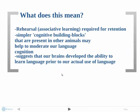Since rehearsal was necessary for the dogs, that may have confounded their retention rates — which were also said in an independent study to have matched the level of three-year-old human children. Rehearsal is also necessary in human children for retention rates to be decent. Simpler cognitive building blocks present in other animals may therefore help to moderate our language cognition by helping to build our language acquisition devices.